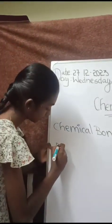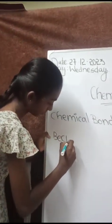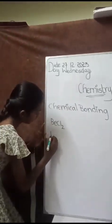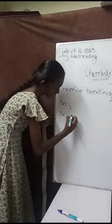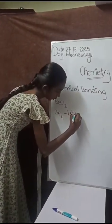For example, I am taking BeCl2, beryllium chloride. Now, we will take beryllium. It is atomic number 4, its electronic configuration is 1s2, 2s2.